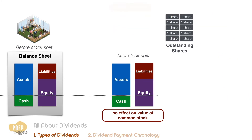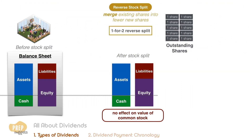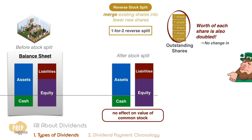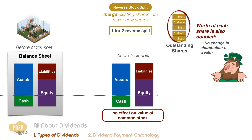Reverse stock splits are the opposite of stock splits, where old shares are merged to form fewer new shares. For instance, a one-for-two reverse split would mean that every two old shares are merged into one new share, effectively halving the number of outstanding shares to five. Even though there are fewer shares, the price of each share will get doubled, so there's no change in the owner's wealth. There is no change in total equity in the company's books as well, as no cash was paid out.